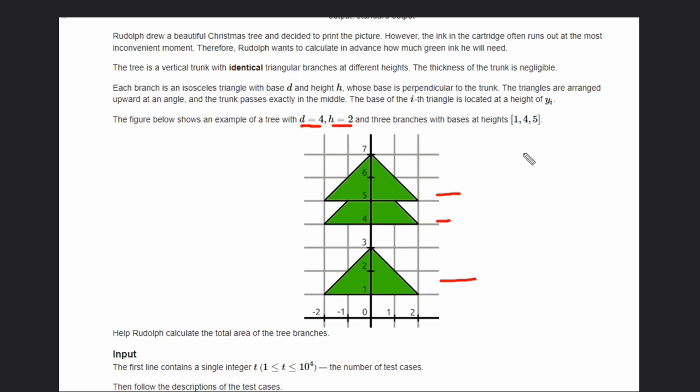And we are also given the branches located at certain heights. This one is at one, this one is at four, and this one is at five. So for the first triangle we will directly add the area. And what is the area of this triangle? Half base into height.